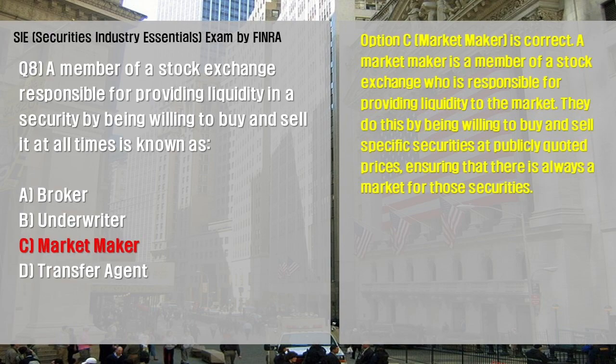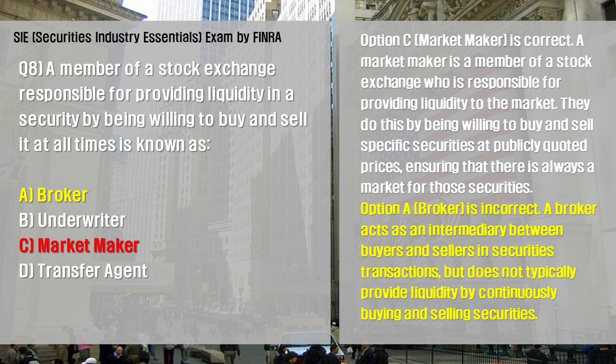Option C, market maker, is correct. A market maker is a member of a stock exchange who is responsible for providing liquidity to the market. They do this by being willing to buy and sell specific securities at publicly quoted prices, ensuring that there is always a market for those securities. Option A, broker, is incorrect — a broker acts as an intermediary between buyers and sellers in securities transactions but does not typically provide liquidity by continuously buying and selling securities.